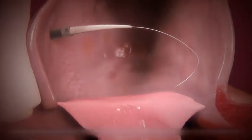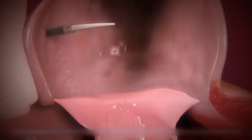MitraClip's steerable guide catheter is introduced over a previously placed guide wire. The dilator is used to gradually advance the guide into the left atrium, and the guide wire and dilator are removed.